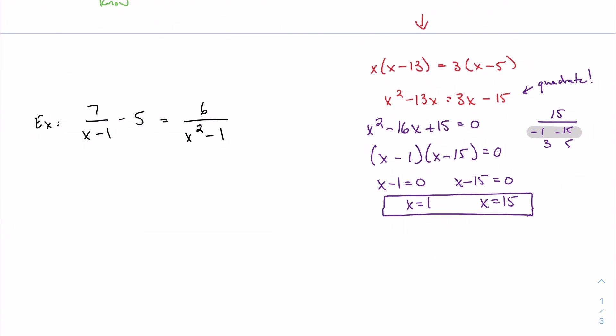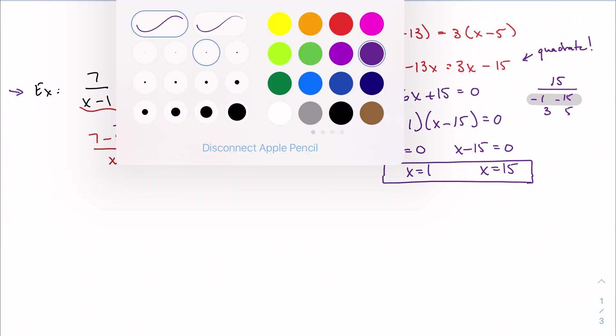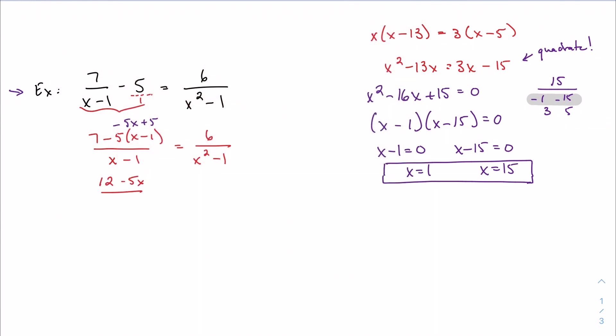So actually, just to show this one more time, let's consider this example over here. I have another LCD case, least common denominator case. So let me simplify this first. Again, we can kind of pretend that this is over 1. So my common denominator is x minus 1. I don't need to do anything to this first term because my denominator matches my common denominator. And then I have 5 times x minus 1. 6 over x squared minus 1. I'm going to simplify this. So I get, well, if I'm thinking here, this is going to be minus 5x plus 5. So that's going to give me 12 minus 5x minus 1 equals 6.